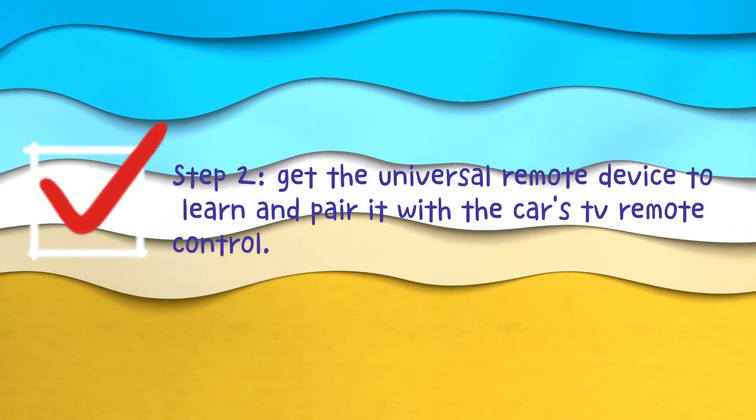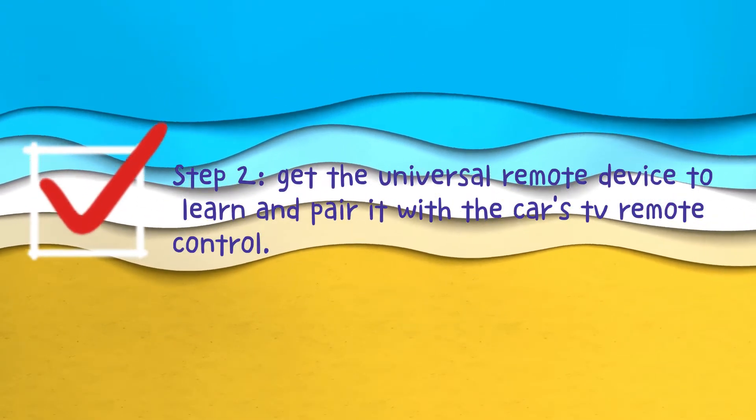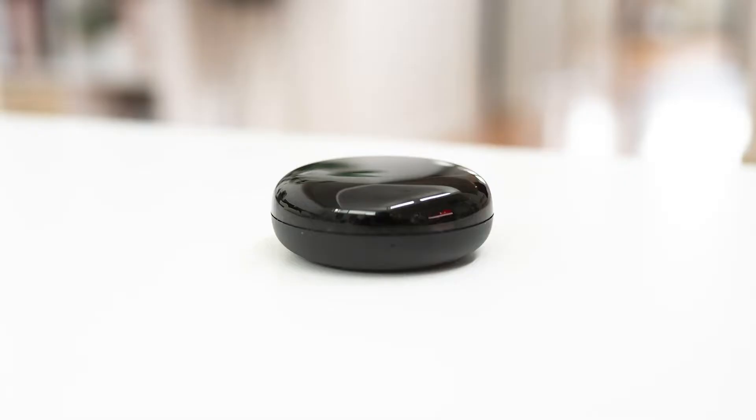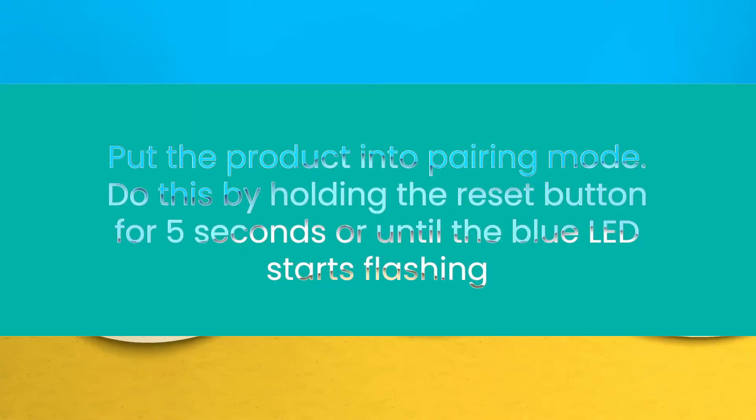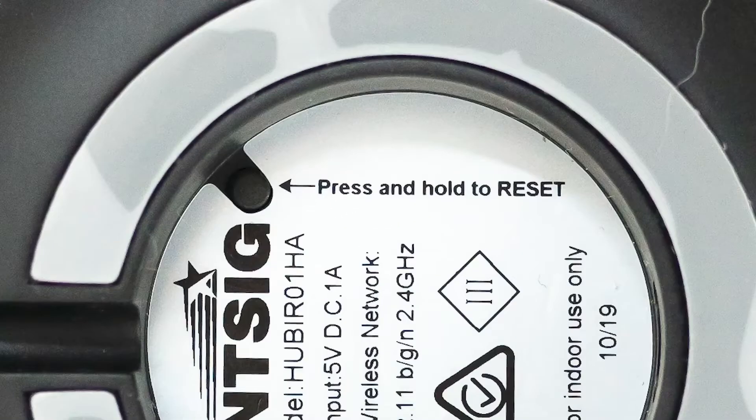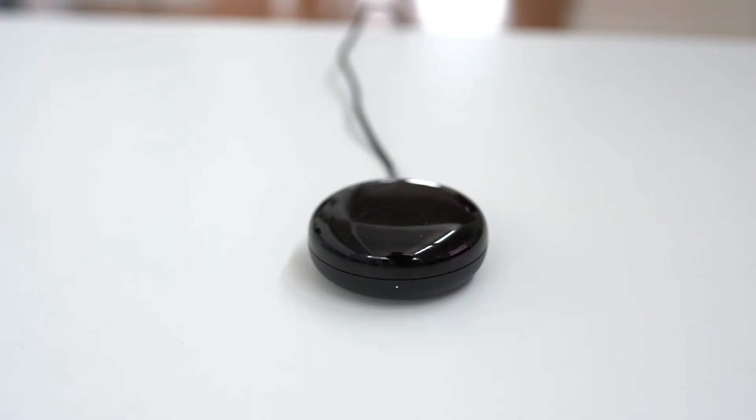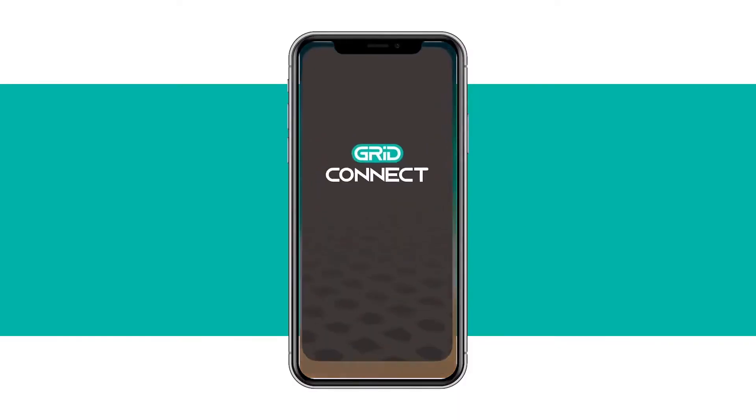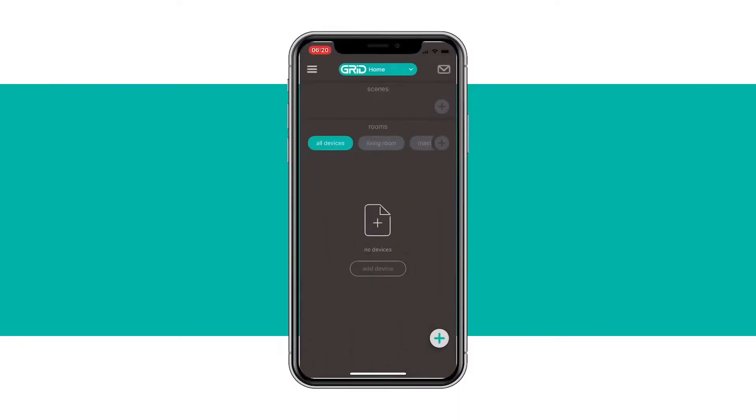Step 2: Get the universal remote device to learn and pair it with the car's TV remote control. Universal IR remote setup guide. Pair using the others option because the TV in the car is normally not in the database. Follow the on-screen prompts.